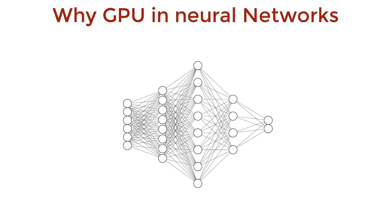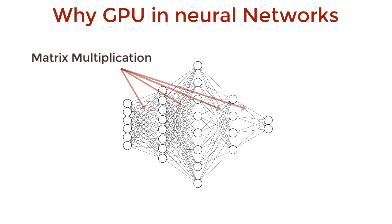Why use GPUs in neural networks? The short answer is that GPUs speed up matrix multiplication, and this is the most fundamental operation in neural networks. But how exactly do they speed up this multiplication?